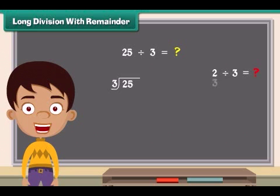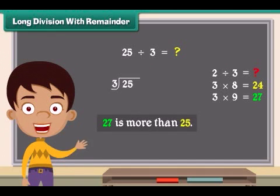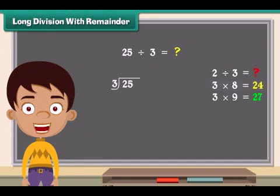We know 3 multiplied by 8 is 24, and 3 multiplied by 9 is 27. 27 is more than 25. So we will take 3 multiplied by 8 which is 24. So put 8 right above 25 and put answer below 25.